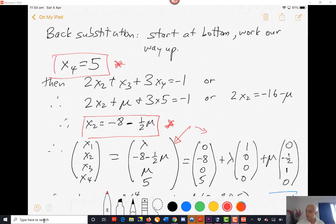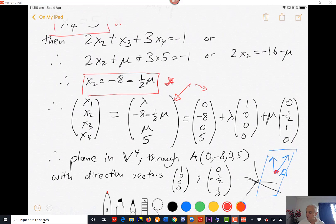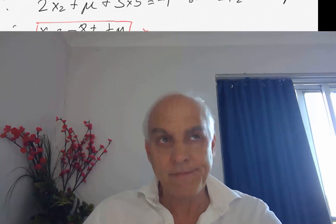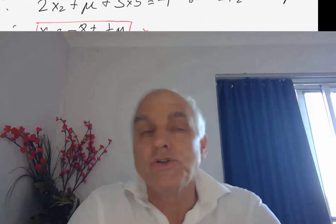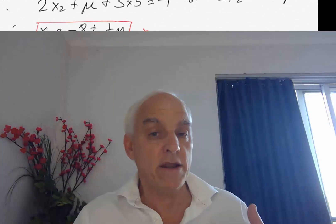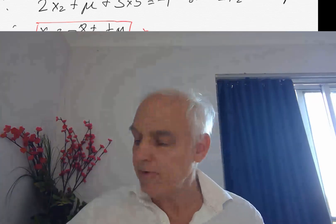Written that way, we recognize that this is a plane in four-dimensional space, through the point (0, −8, 0, 5), with two direction vectors given by (1, 0, 0, 0) and (0, −½, 1, 0). So that describes a high school approach to this second half of the row reduction algorithm — going from a row echelon augmented matrix to a reduced row echelon augmented matrix. Let me remind you about that.